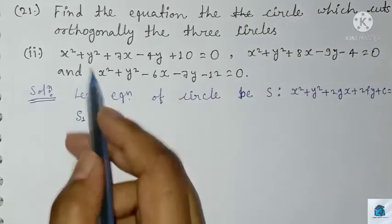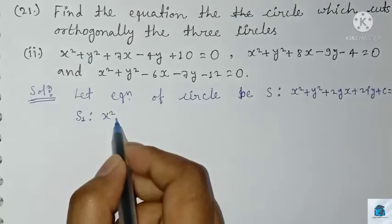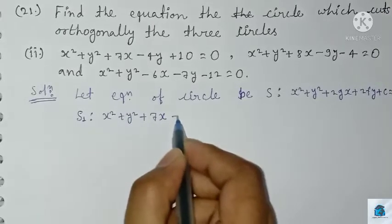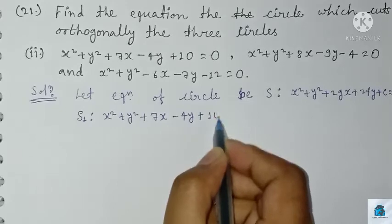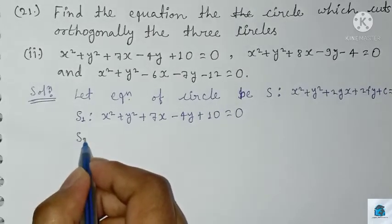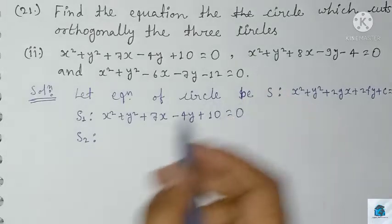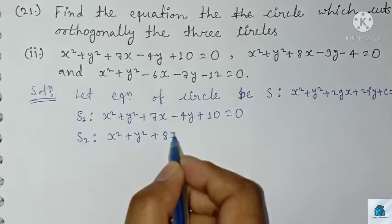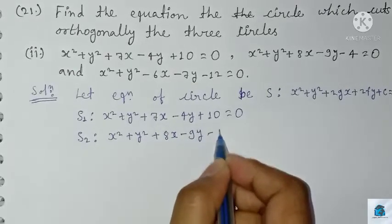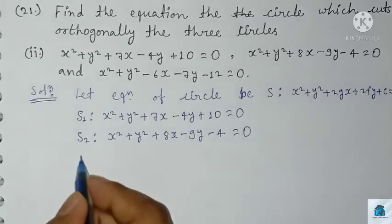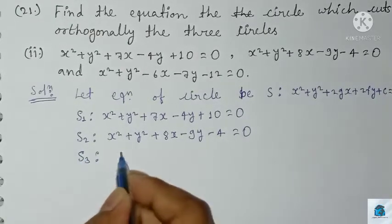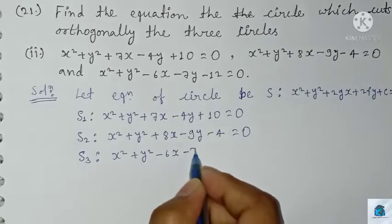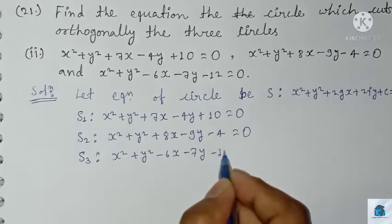Let the equation of the first circle S1 be x² + y² + 7x - 4y + 10 = 0. The equation of the second circle S2 is x² + y² + 8x - 9y - 4 = 0. And the equation of the third circle S3 is x² + y² - 6x - 7y - 12 = 0.